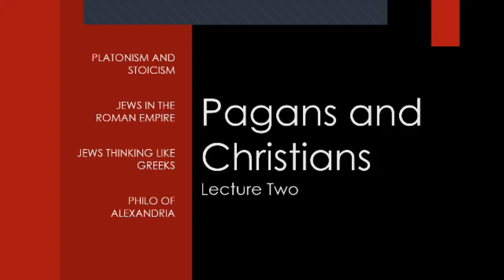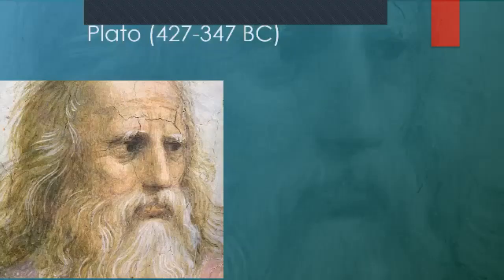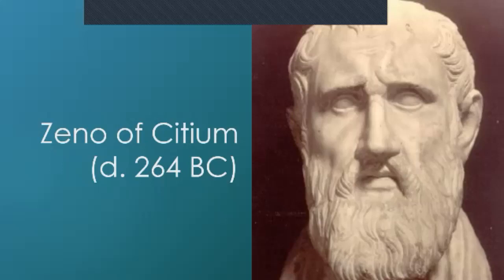The Stoic doctrines go back to Zeno of Kittium, who developed them in the 3rd century, and were modified further in the 2nd century, so that by the Roman period, Roman Stoicism has quite substantial differences from where it began. Same with Plato: Neoplatonism is in many ways very different from original Platonism, although its practitioners saw themselves simply as continuators of the Platonic tradition.